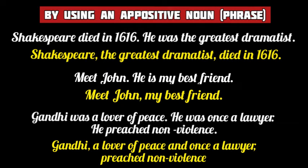Up next, we are going to study the use of an appositive noun or noun phrase in synthesis of sentences. An appositive noun or noun phrase, also known as a noun in apposition, is one that is placed right next to another noun in the sentence to describe or rename the former. For example, 'Shakespeare died in 1616' and 'he was the greatest dramatist' — the second sentence describes the noun in the first, so we replace it with a noun in apposition: Shakespeare, the greatest dramatist, died in 1616. 'Meet John' and 'he is my best friend' — using the noun phrase in apposition: Meet John, my best friend.